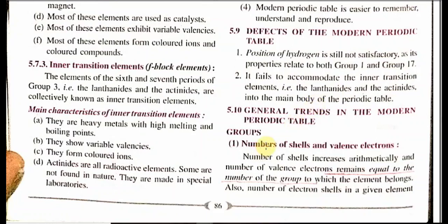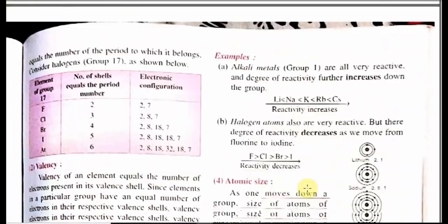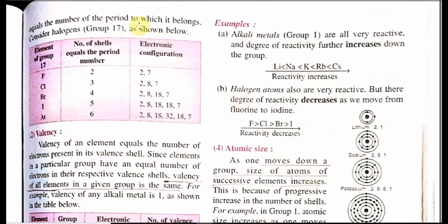We will go to general trends in the modern periodic table. This is 90% applicable to all elements, all groups, and all periods. Regarding number of shells and valency electrons: the number of shells increases arithmetically going down a group, and the number of valence electrons remains equal to the group number. Also, the number of electron shells in a given element is equal to the period to which it belongs.